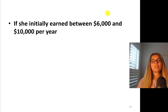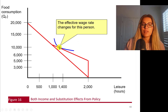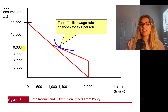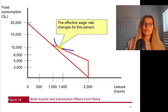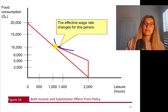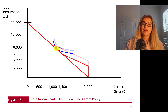If the mother initially earned between $6,000 and $10,000 a year, she's going to get hit by two effects — both income and substitution effects — and they will go in the same direction. Imagine this mother who is making between $6,000 and $10,000, taking about 1,300 hours of leisure and working about 700 hours, making about $7,000 in the labor market. What happens is she moves to a different budget line. Remember, the original budget line had a slope of negative 5, and this new one has a slope of negative 10 — a steeper budget line. Both income and substitution effects will tell her to consume less leisure.